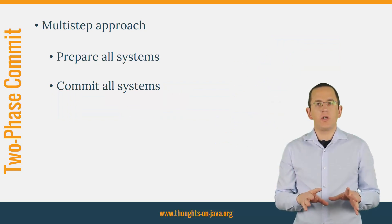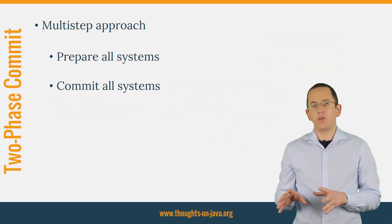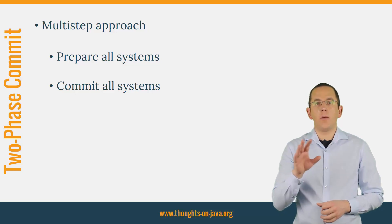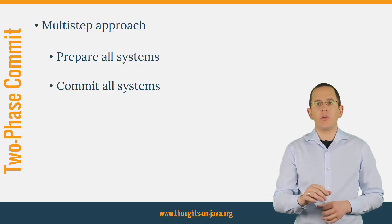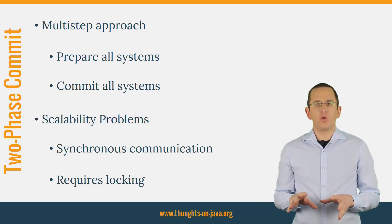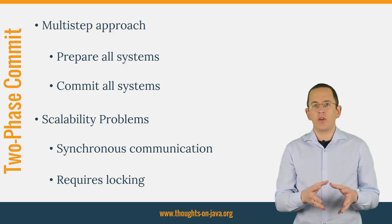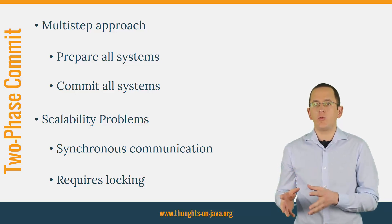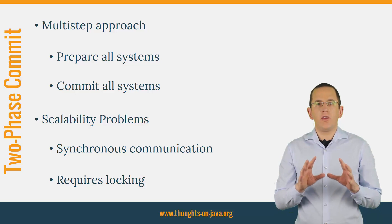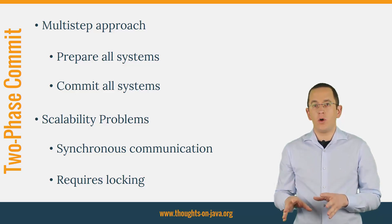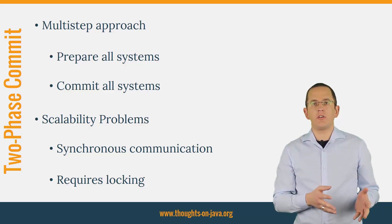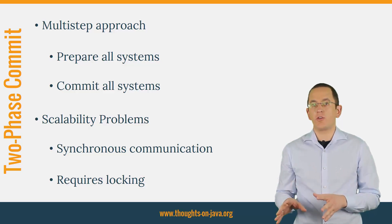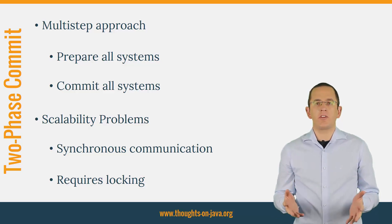A two-phase commit is more complicated than the simple commit of a local transaction. After a system confirms the prepare command, it needs to make sure that nothing will change until it receives the commit or abort command. The only way to do that is to log all the information changed in the transaction. As long as this log is active, no other transaction can use this information. These logs can become a bottleneck that slows down your system and should obviously be avoided.